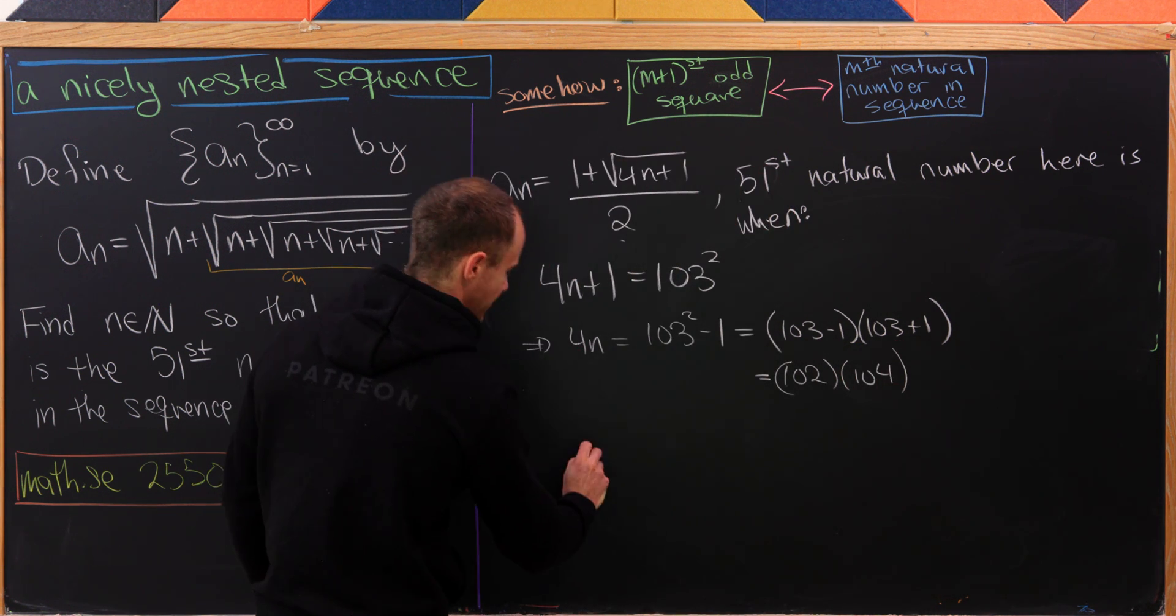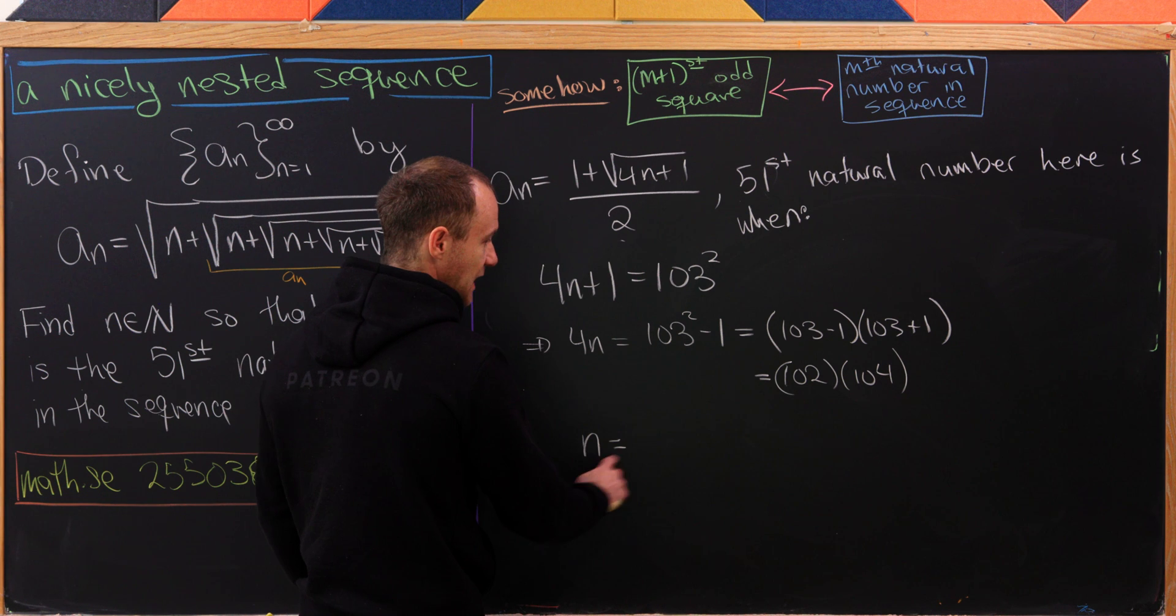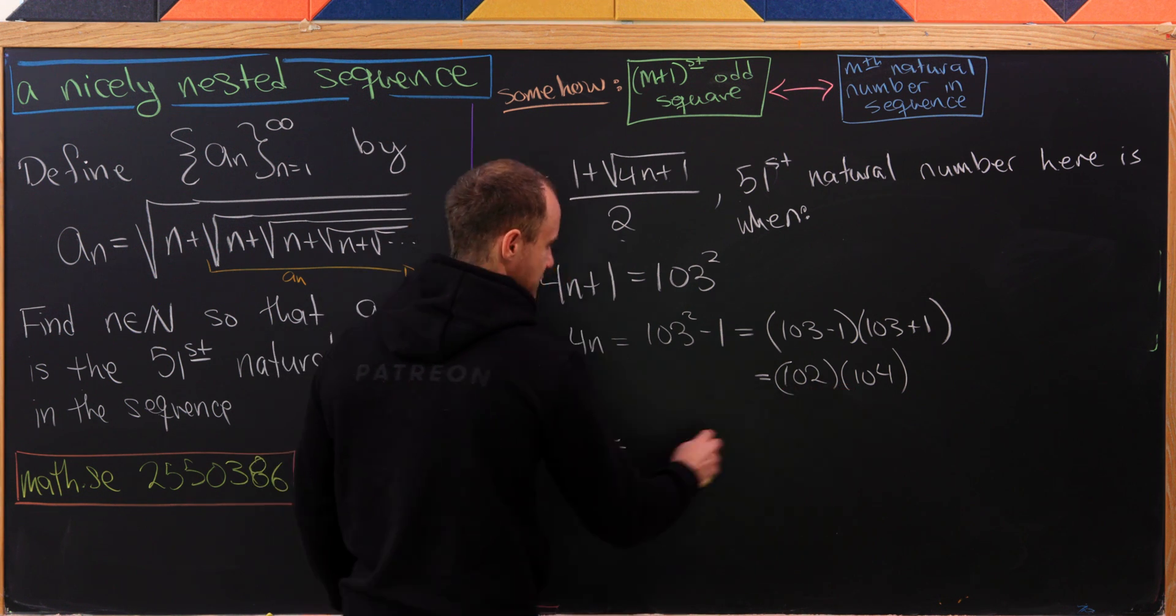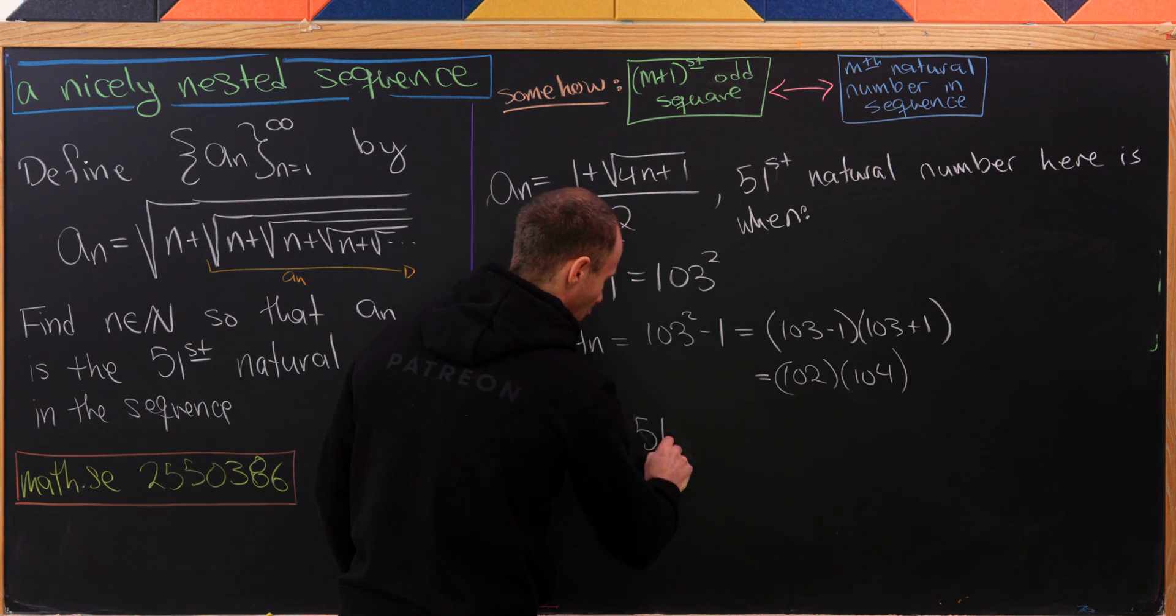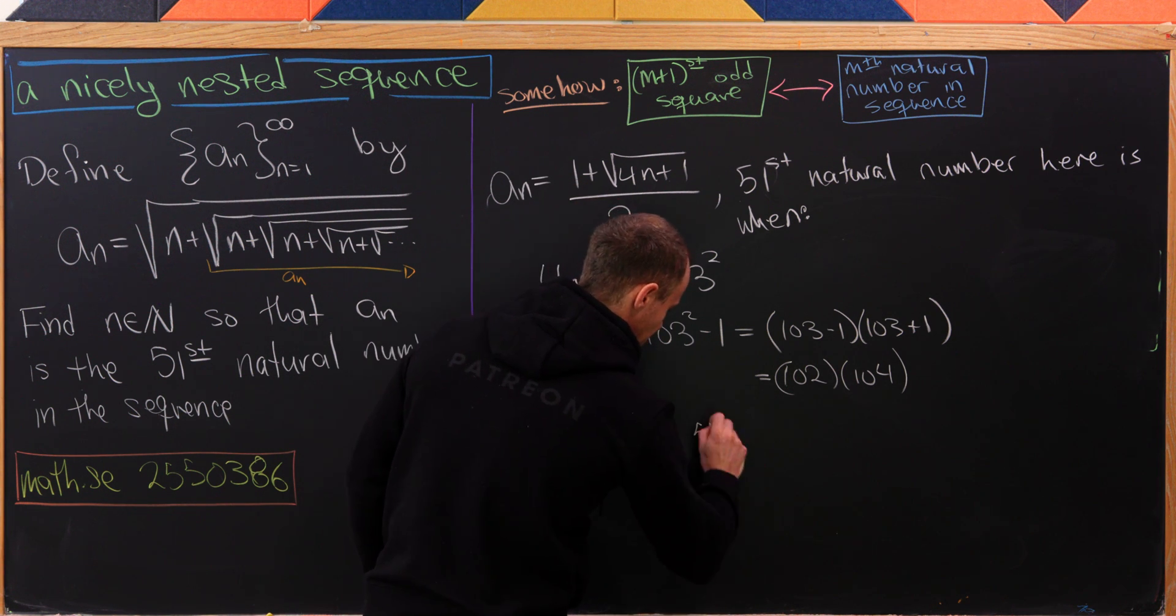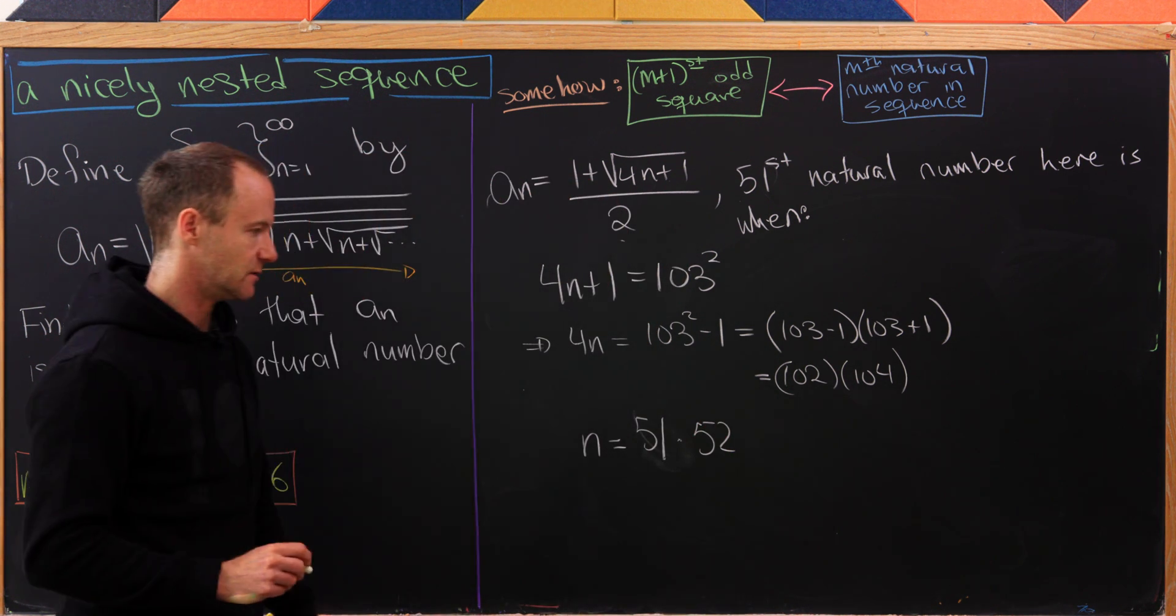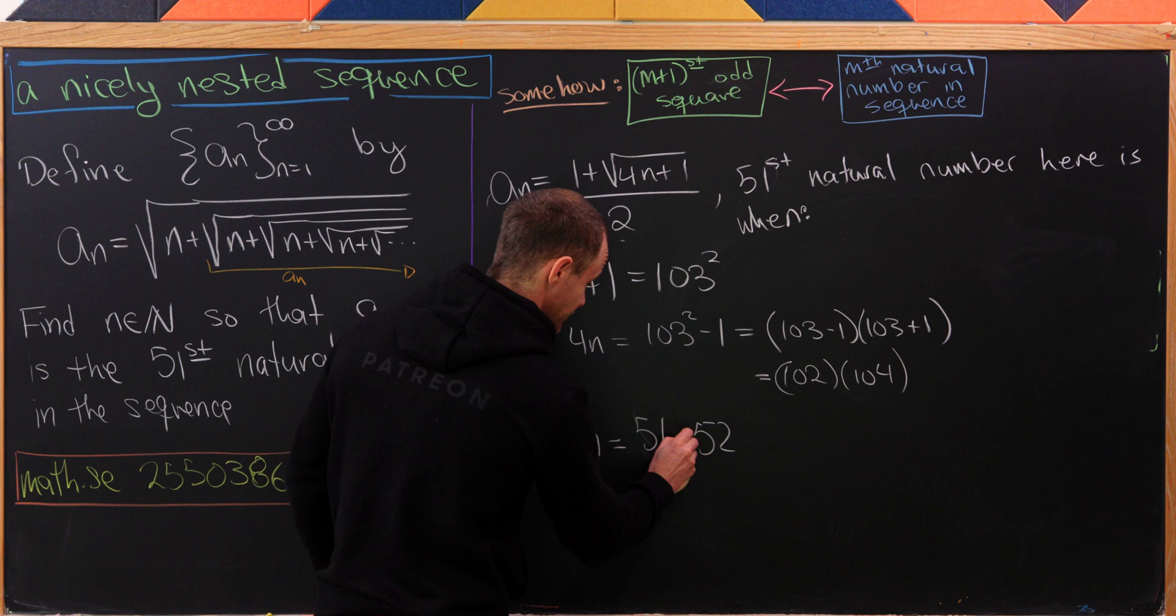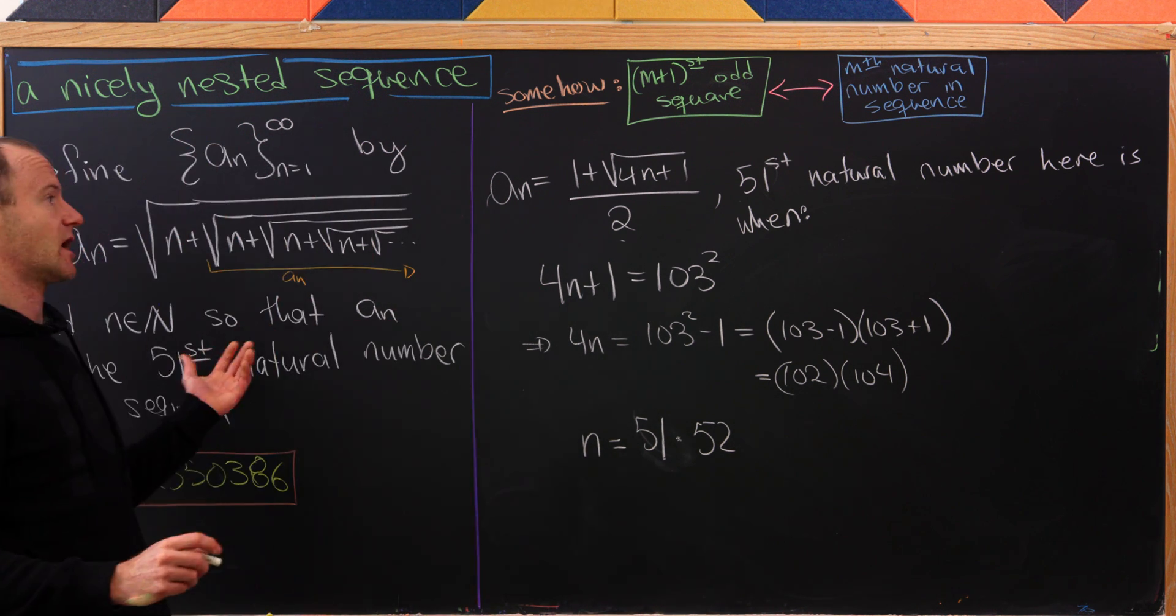Now we can divide both sides by 4. That'll give us n equals, well I'll divide this one by 2 and this one by 2, so it'll be 51 times 52. And that is the natural number n that solves this problem.